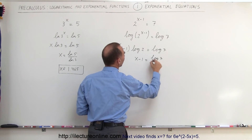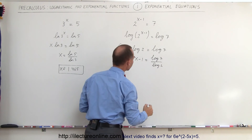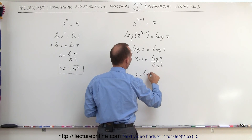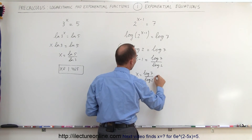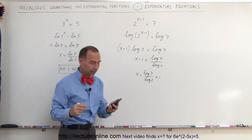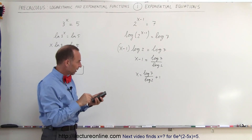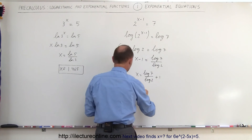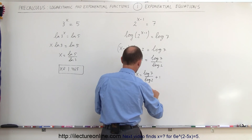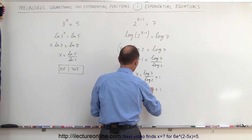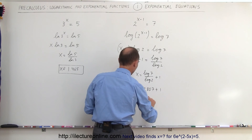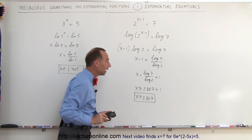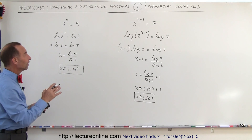Then we add 1 to both sides, so x is equal to the log of 7 divided by the log of 2 plus 1. Grabbing the calculator: log of 7 divided by log of 2 gives approximately 2.807, and so x is approximately 3.807 to three decimal places.